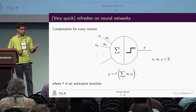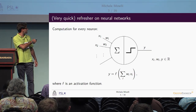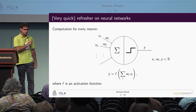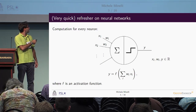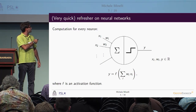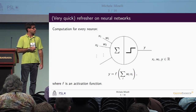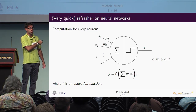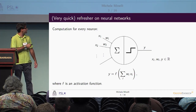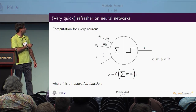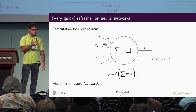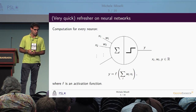Two things happen in the neuron. First, we compute the multisum — we scale the inputs Xi's by the weights Wi, multiply them, and sum everything together. Then we apply a nonlinear function called an activation function. The result Y is propagated to the following layer. Note that everything is over the reals — Xi's, Wi's, and Y are all real-valued numbers.